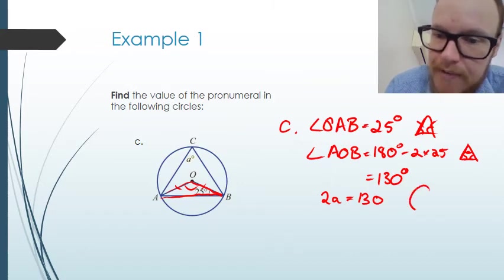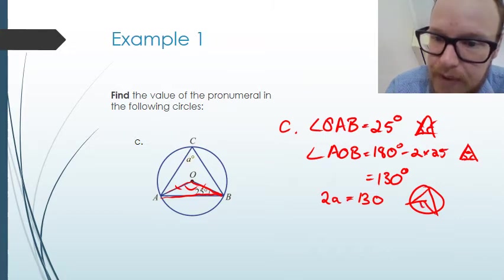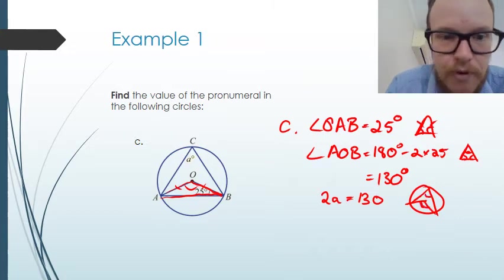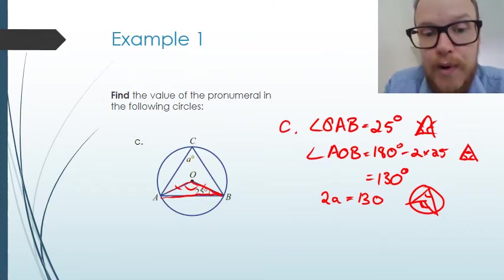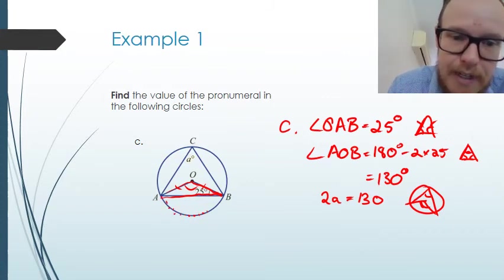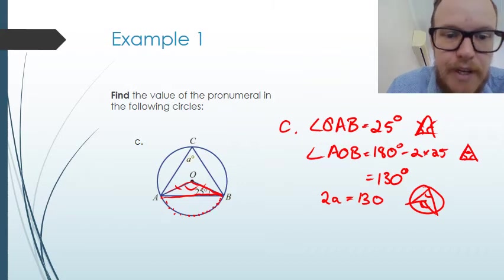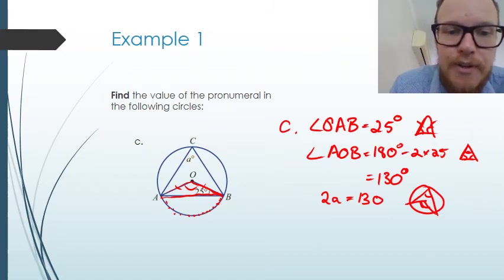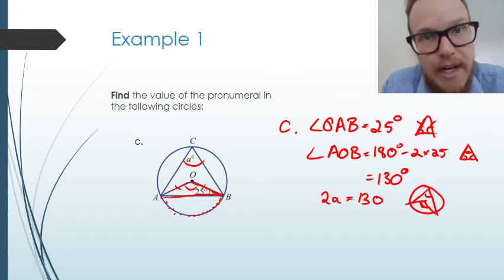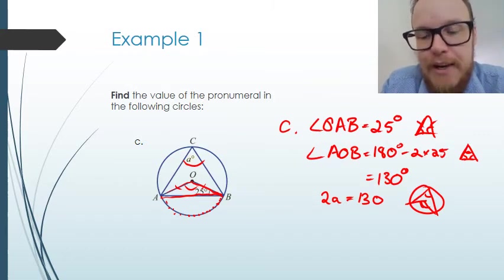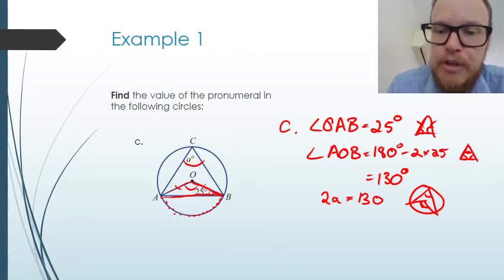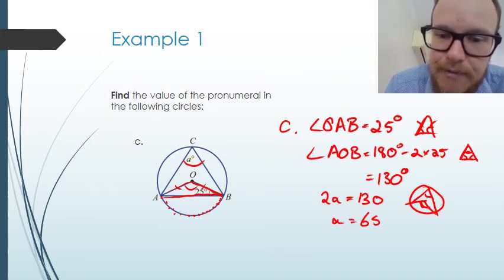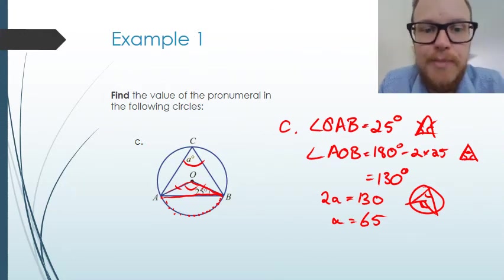The reason is that angle A at the edge of the circle and angle AOB at the centre are both subtended by the same arc AB. So we can use circle theorem one, and that means A must equal 65, because we divide both sides by two.